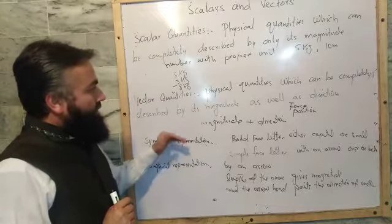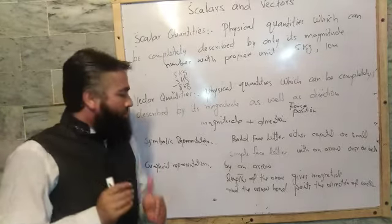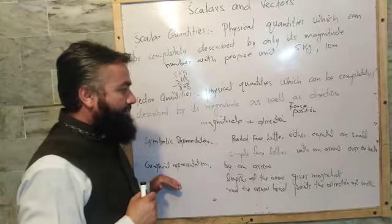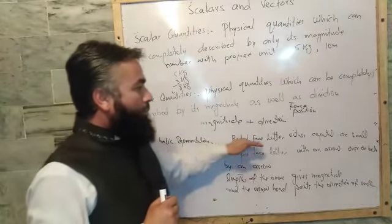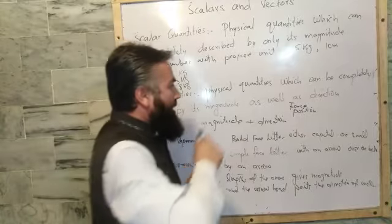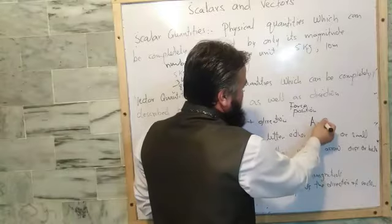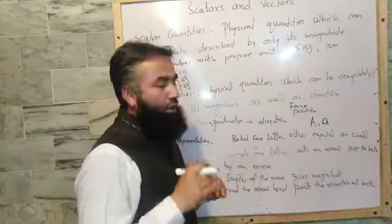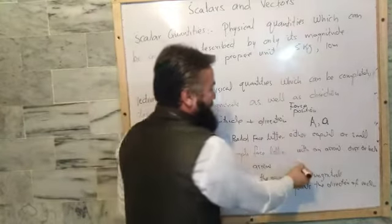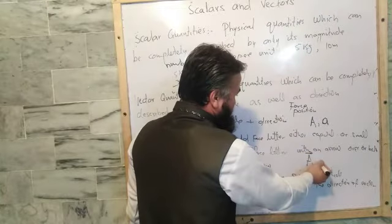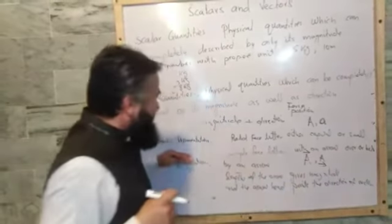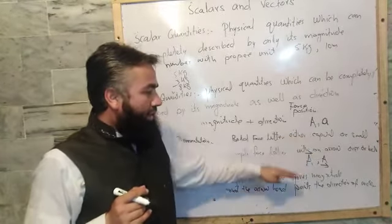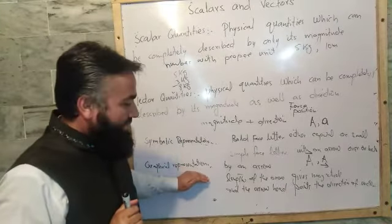How can we represent vector quantities? There are two ways: symbolic representation and graphical representation. In symbolic representation, we can represent a vector by a bold face letter, either capital or small. If it is not a bold face letter, and you want to represent it by a simple face letter, then we put an arrow or bar below it. So in symbolic representation, we use a bold face letter or a simple face letter with an arrow or bar below it.